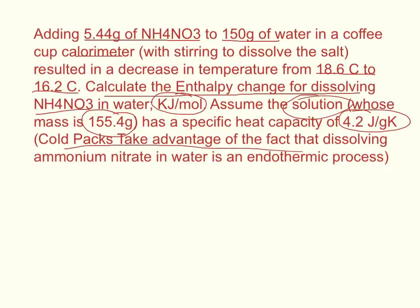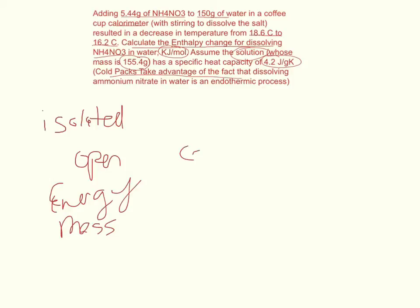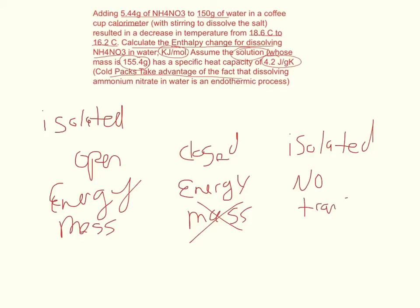So the first thing in understanding this is to understand what heat transfer is. So in a calorimeter, we're considering it to be an isolated system. So it is close to an isolated system for experimental purposes. And what that means is you have basically three types of systems in thermodynamics. You have an open system in which you can transfer both energy and mass. You have a closed system in which you can transfer energy, but not mass. And then an isolated system, you cannot transfer anything. No transfers of energy or mass.